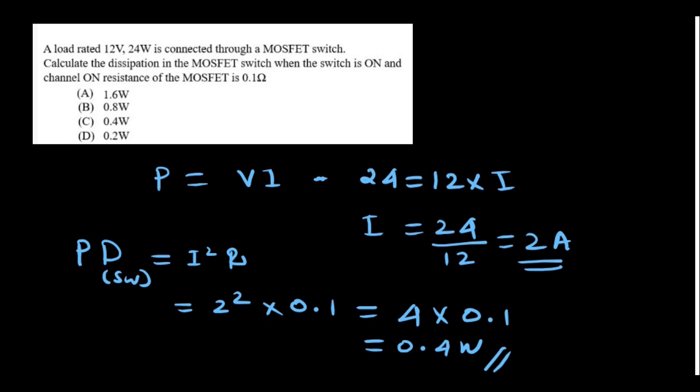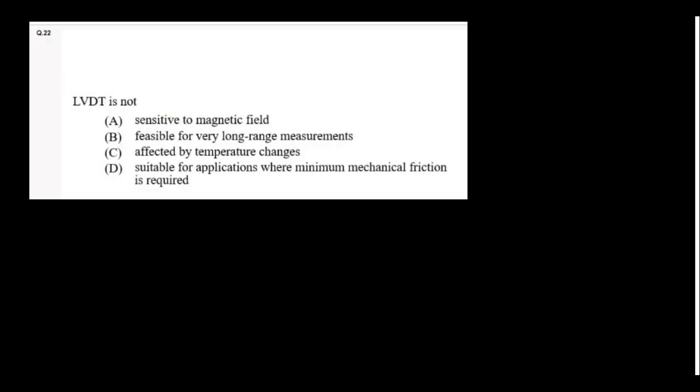A load rated 12 volt 24 watt is connected through a MOSFET switch. Calculate the dissipation in the MOSFET switch when the switch is on and channel on resistance of the MOSFET. Once you calculate, you will get it as 0.4 watt. LVDT is used to measure small distance, so not feasible for very long range measurements.